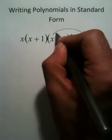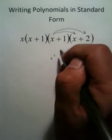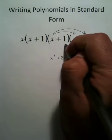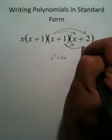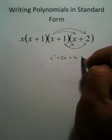So we'll start by multiplying x times x, which is x squared. Then we're going to take x times 2, 2x. Then we're going to start multiplying this 1. 1 times x is 1x, and 1 times 2 is 2.